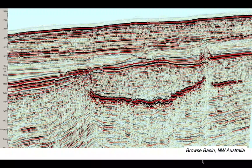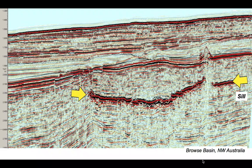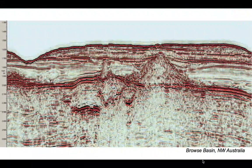Here is another part of the Browse Basin. In the deeper part of the section there is a discontinuous, dish-like structure with high amplitude, presumably representing some kind of sill. At the end of the sill there is a small cone, which may have been erupted as the sill broke out at the surface. Finally, another profile shows volcanic cones and sills again, and we can attempt a more complete interpretation.